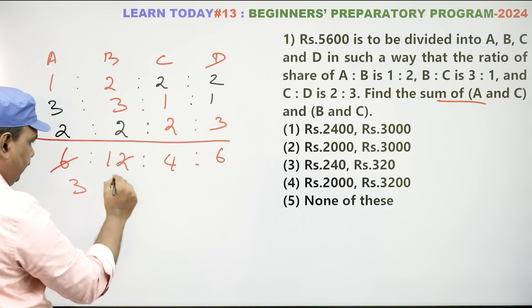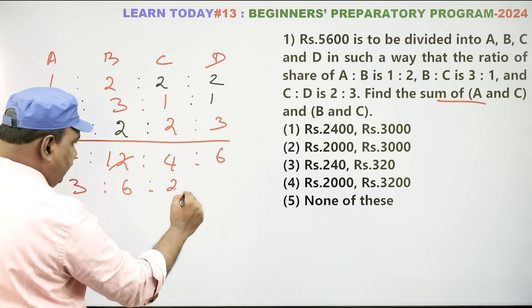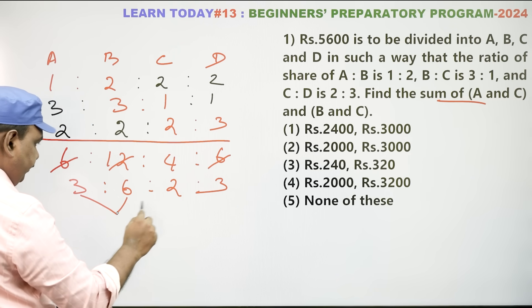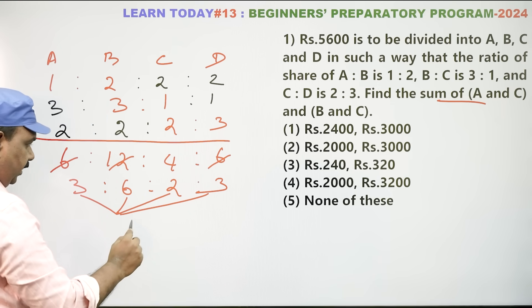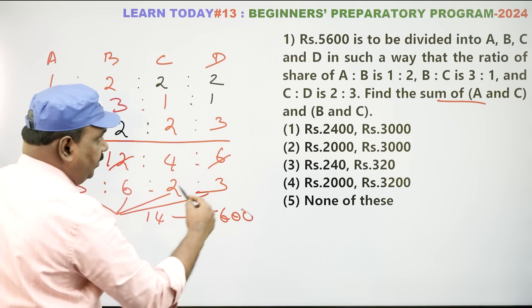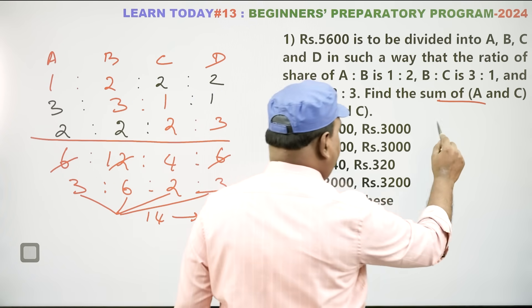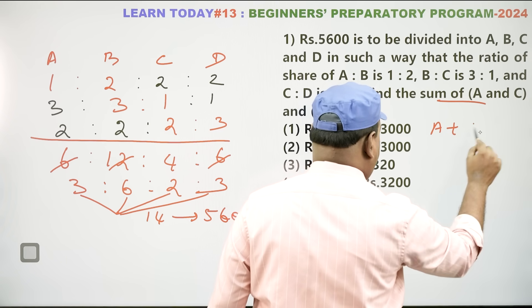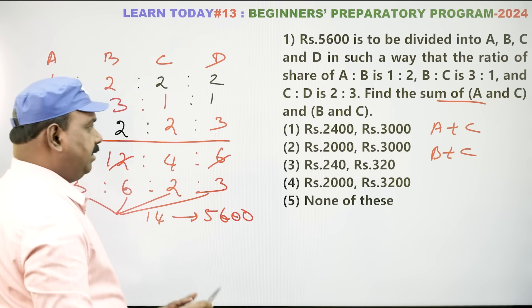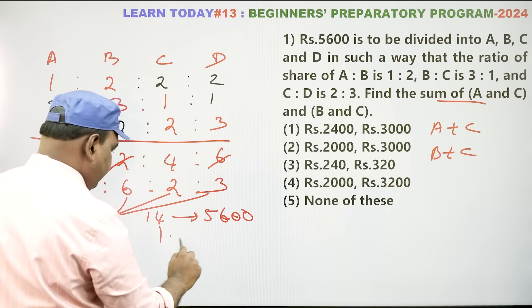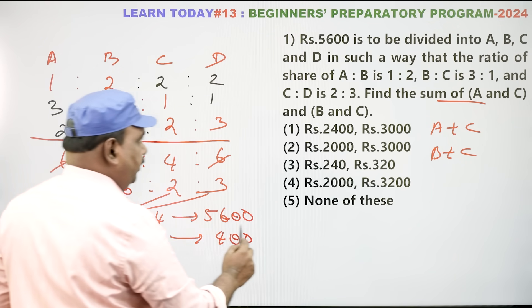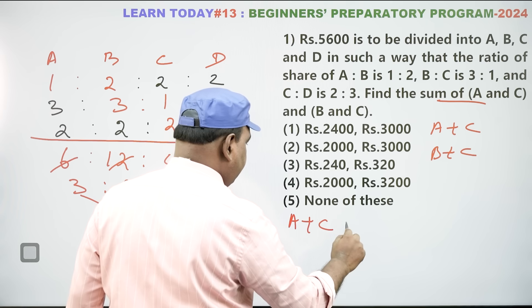It is canceling. Only thing is 2 table added. 3 times 2 is 6, 2 times 2, and 3 times 2. It is canceling. Overall total: 9, 11, 14. 14 parts equal to 5600 given. But now find out. Find out the sum of A+C and B+C. Independent of find out. One part equal to how much? One part is 400.